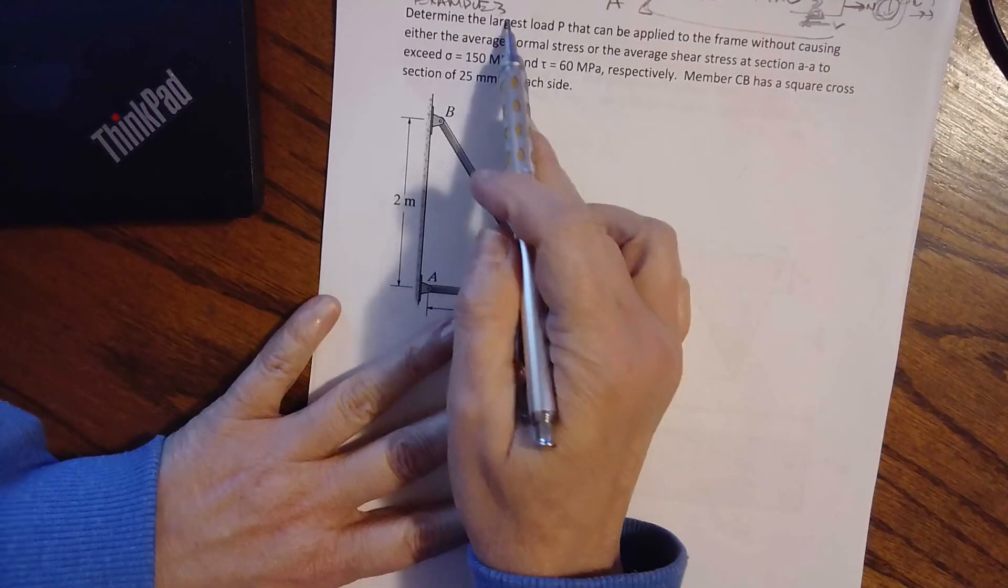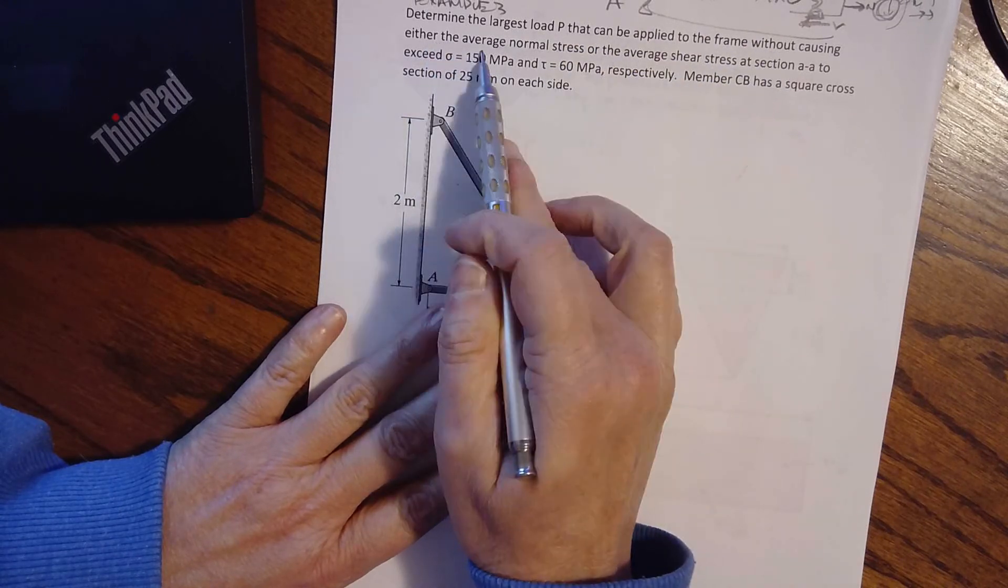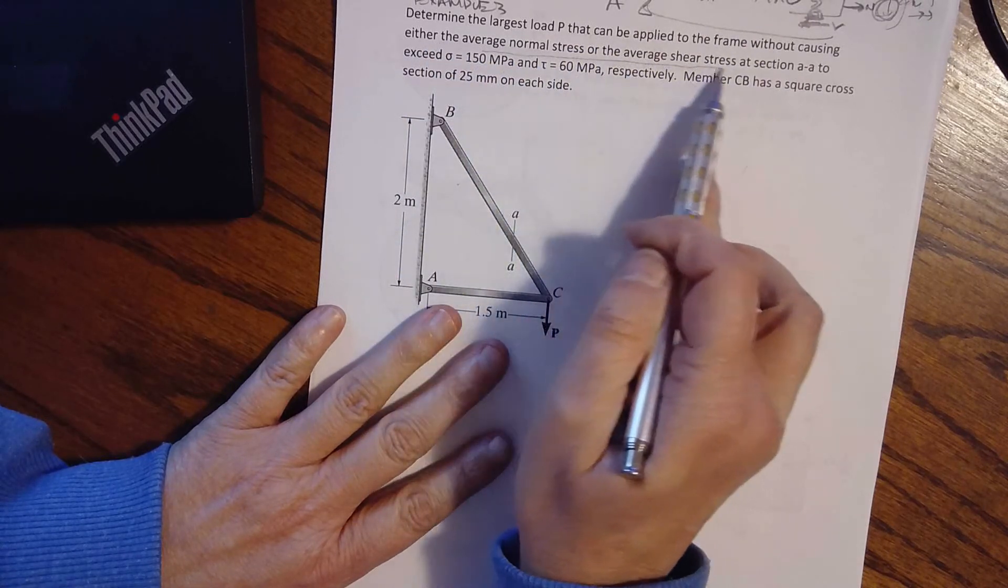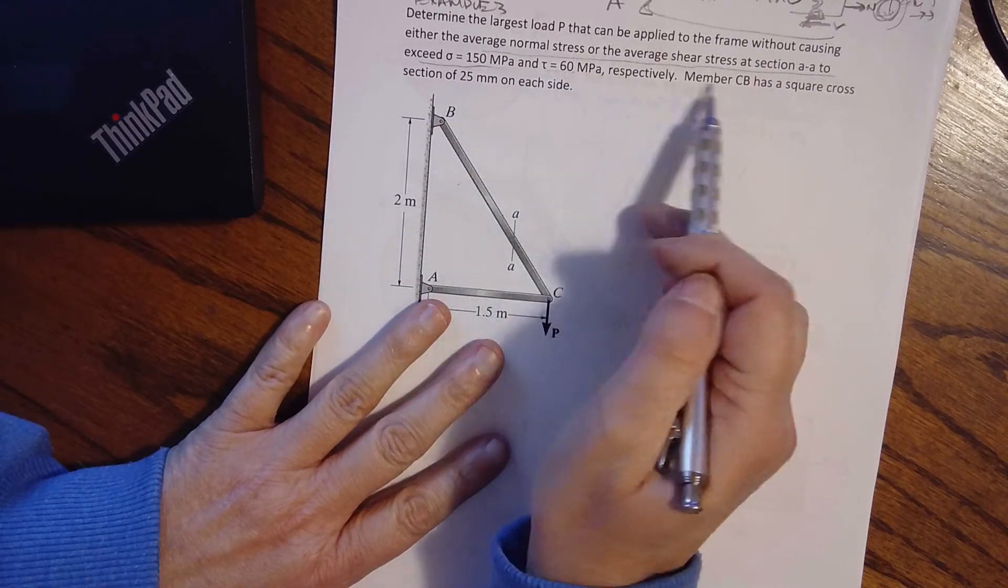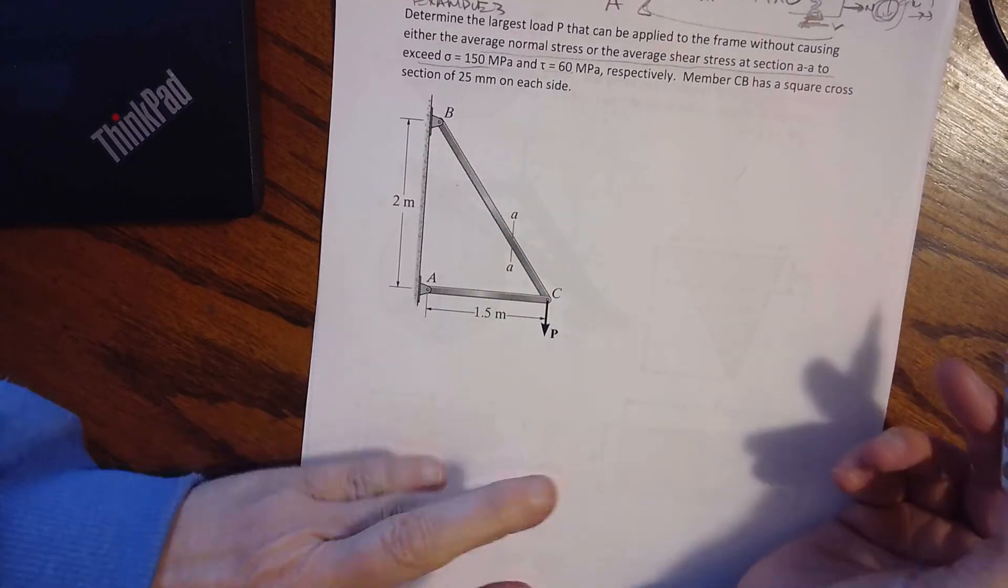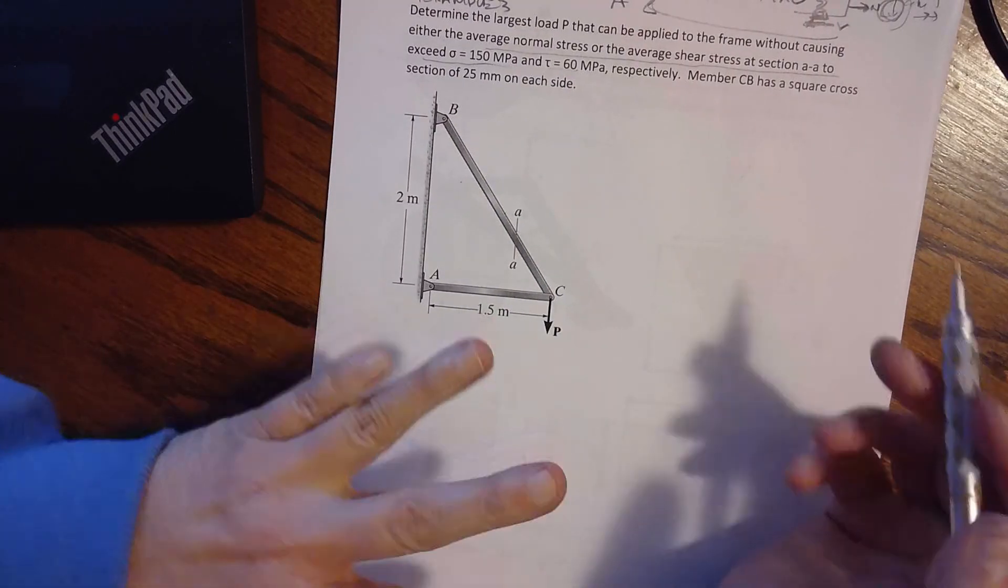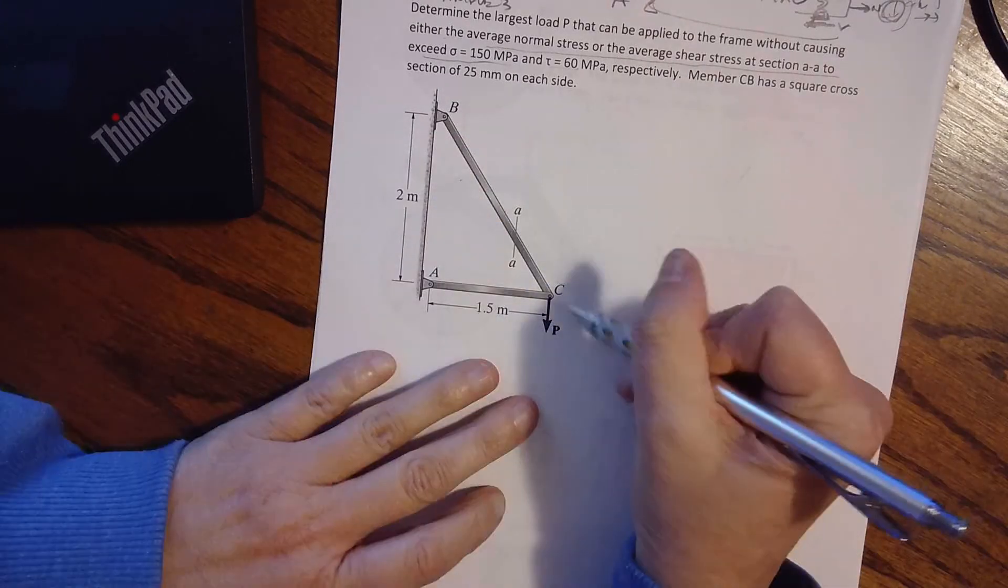Here, I want to determine the largest load P that can be applied to the frame without causing either the average normal stress or the average shear stress at section AA to exceed. Remember CB has a square cross section of 25 millimeters on each side. So first off, what is going on in this picture? It's basically a truss, a frame, a compound beam.